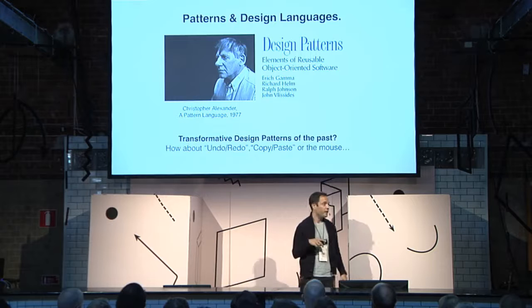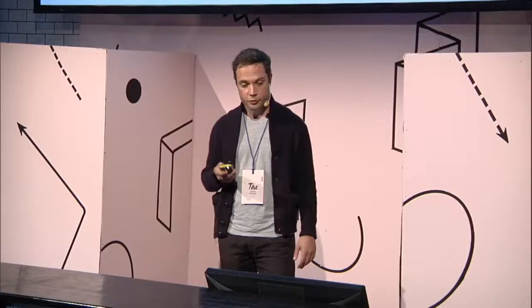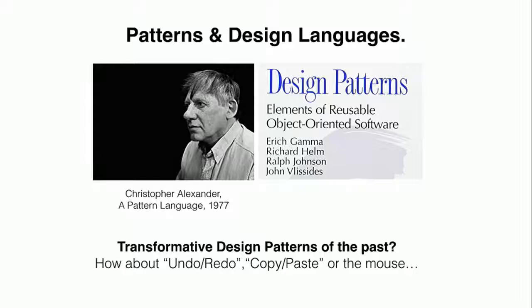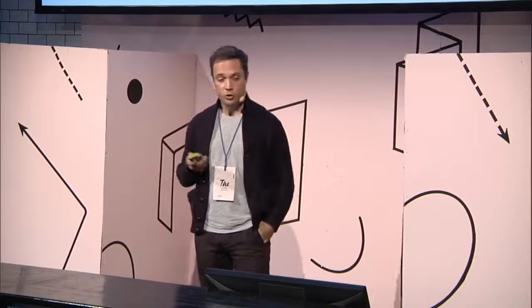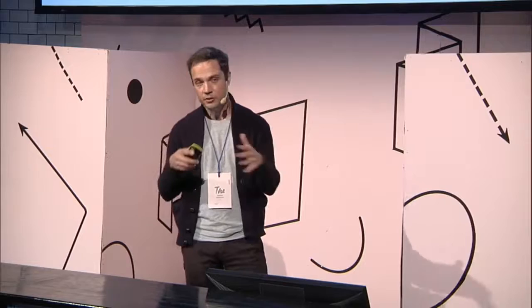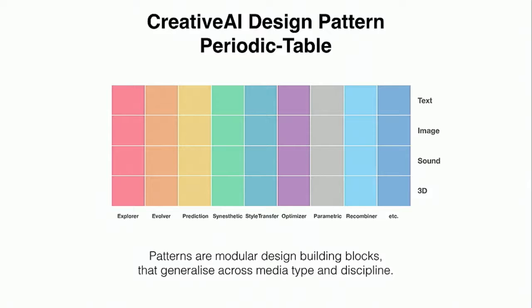One approach I recently started is through the lens of Christopher Alexander's work on design patterns — you may have seen these in OOP programming or in architecture. More fundamentally, the last truly transformative design patterns are things like undo/redo, copy/paste, maybe even the computer mouse. I think we're heading to a new set of design patterns equally powerful as those, if not more. Our team has been trying to come up with what you could call a periodic table of creative AI — a design pattern set that lets you rapidly build systems without becoming a code monkey.